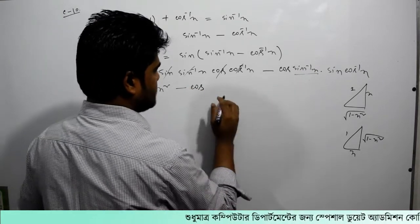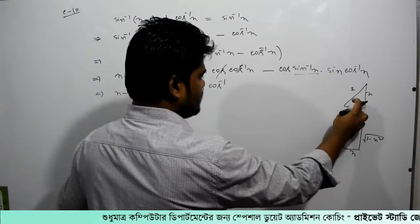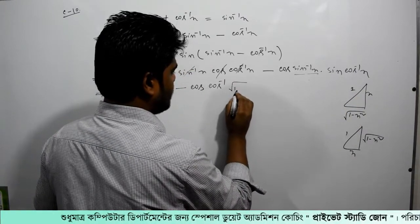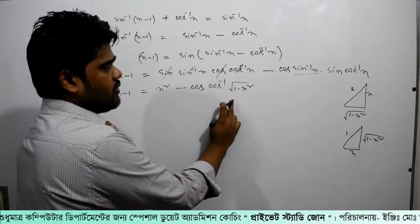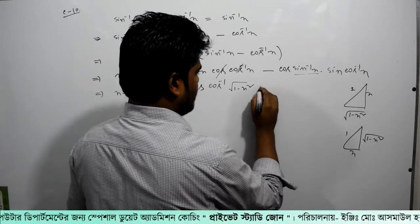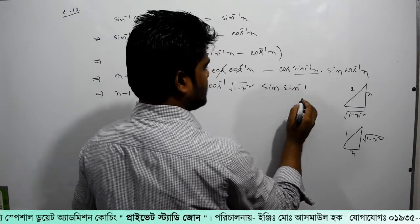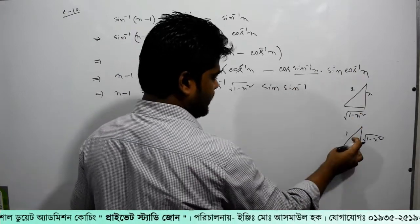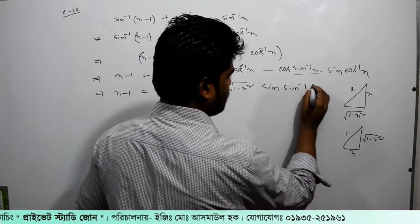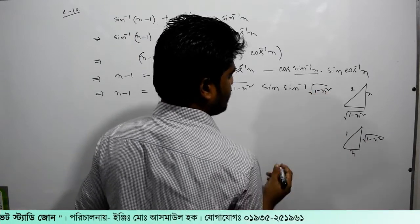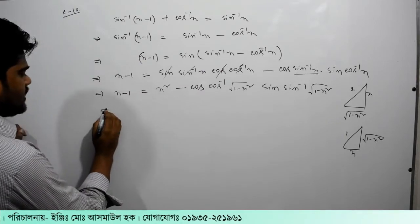sin inverse x এর জন্য জুটর তিরী ভূজ বানাই। তো cos inverse equal to কী লেখা যায়? √(1 - x²) by 1 — মানে ভূমি ভাগ অতিভূজ। নিচে 1 লেখলে মানে sin inverse এর জন্য জোড়া তিরী ভূজে sin inverse equal to lombo (লম্ব) — অতিভূজ। lombo কতো? root over 1 minus x square, নিচে 1।